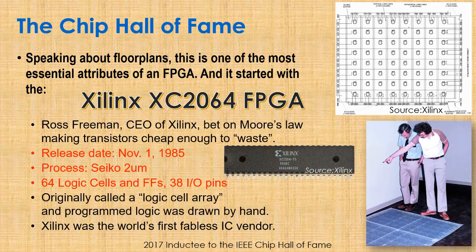The XC2064 was released in 1985, made in a 2-micron process. It had 64 logic cells and flip-flops and 38 IO pins — they called it a Logic Cell Array. The programming logic was done completely by hand; there were no synthesis or place-and-route tools like Vivado. An important point: Xilinx was the world's first fabless IC vendor. Today fabless is common — Qualcomm, Marvell, Apple, Amazon are all fabless — but in those days all companies had their own fabs, and Xilinx was the first to send their chip to an outside foundry.